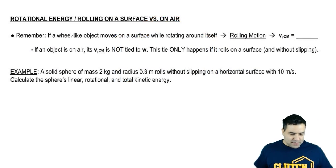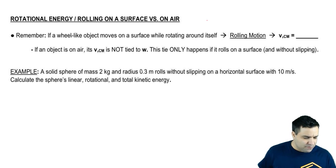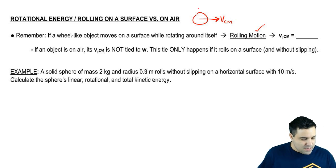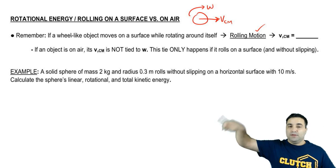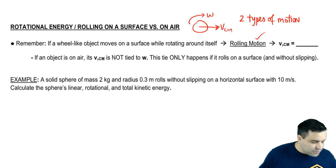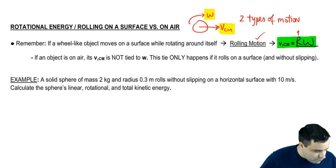So let's look into that real quick. As I just said, a wheel-like object rotating and moving around itself is called rolling motion. You have a V, which is often referred to as the V of the center of mass, and you have an omega because you're rolling around yourself. And there are two types of motion here. What's also important is that there's a relationship between V_cm and omega, which is V_cm equals R omega, and the R is big R radius.